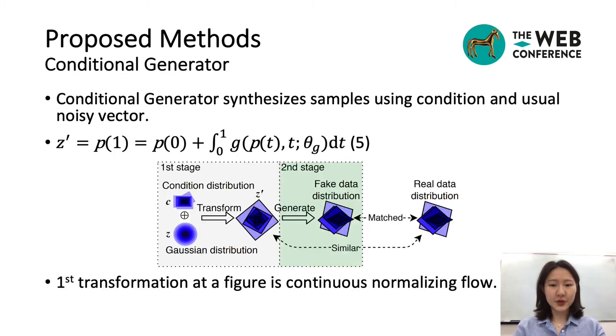The generator of OCTGAN is a conditional generator, which creates a fake sample from a noise vector and condition. We put a latent vector z and a condition into the mapping network, which consists of ODE layers in order to transform it. Using this transformed vector z prime, the generator makes fake samples. I'd like to note that the ODE used for this mapping network is independent from the ODE of the discriminator.